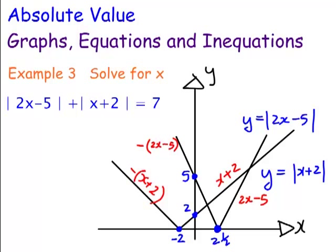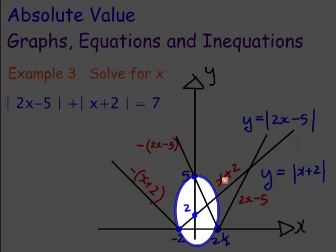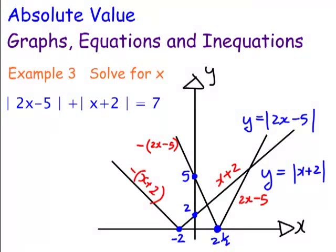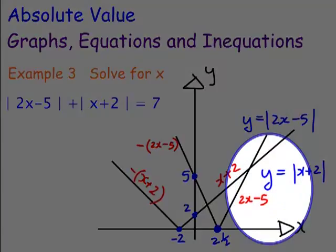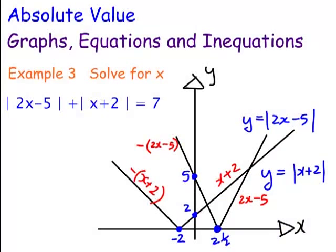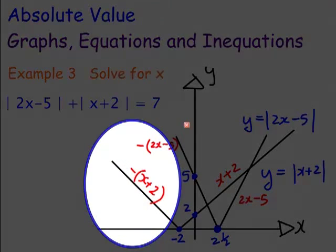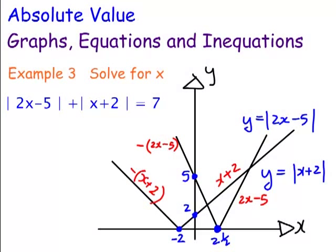First up, we're going to draw the graph of this combined absolute value function. There are a couple of critical points: minus 2 and 2 and a half. In the middle section I'm going to add those two graphs together. On the left side, I'll add minus 2x plus 2 and the negative of 2x minus 5 — when x is less than negative 2.